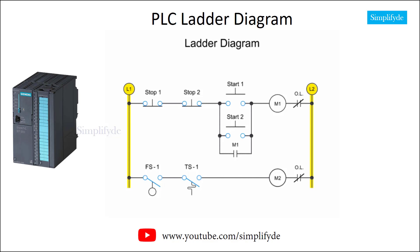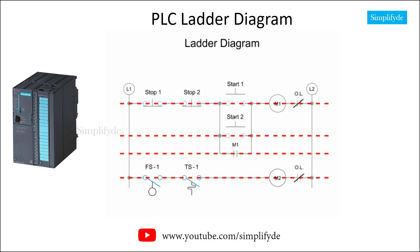To represent the application of a numbering system allows the ability to reference key components of a complex circuit. In this diagram we have four rungs that comprise the entire control circuit, and we'll number them one through four.